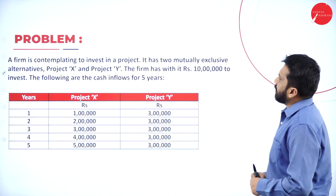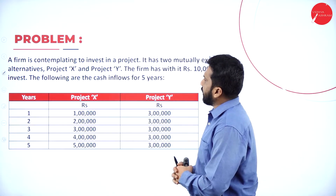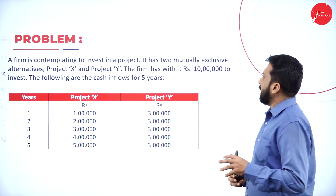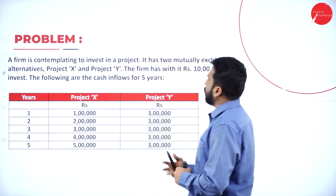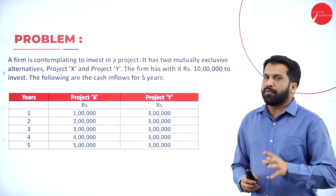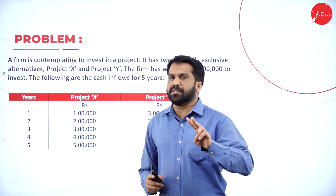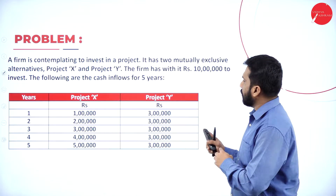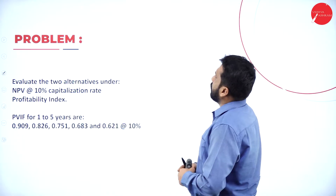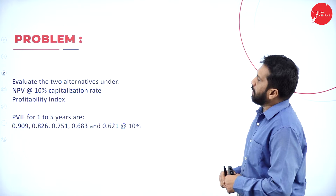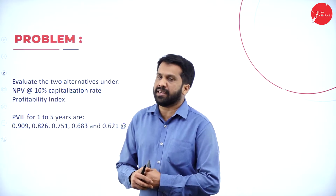A firm is contemplating to invest in a project. It has two mutually exclusive alternatives: project X and project Y. The firm has Rs. 10,00,000 to invest. The cash inflows for 5 years are given. We need to evaluate the two alternatives under NPV at 10% capitalization rate, and also find the profitability index (PI).